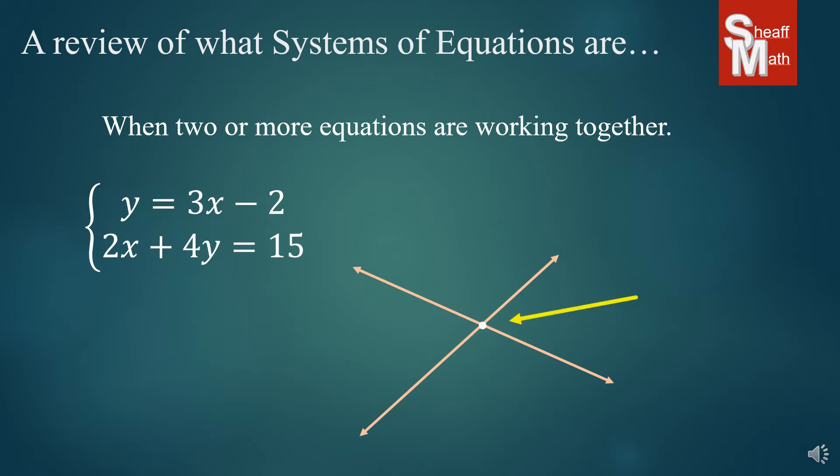That dot right there, this is the most important point in systems of equations. This is what we're trying to find. This point of intersection is called the solution, and that solution is an x-y coordinate pair.